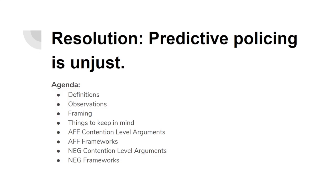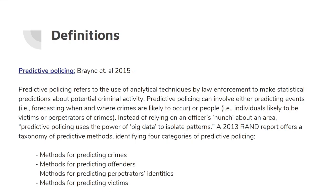The resolution for LD, the 2020 March-April topic, is: Predictive policing is unjust. For this entire analysis, the agenda covers definitions, observations, framing, and things to keep in mind, as well as affirmative contention-level arguments, affirmative frameworks, negative contention-level arguments, and negative frameworks.